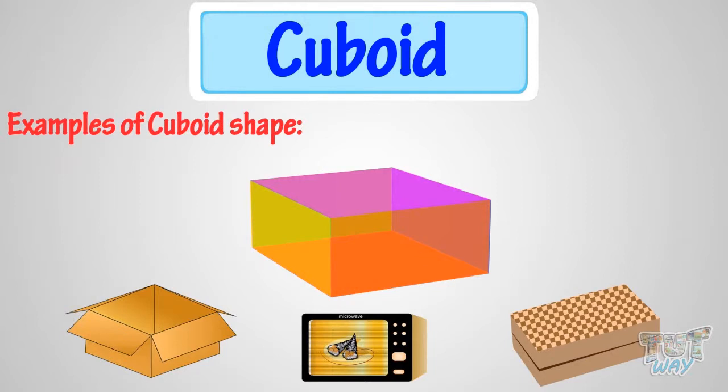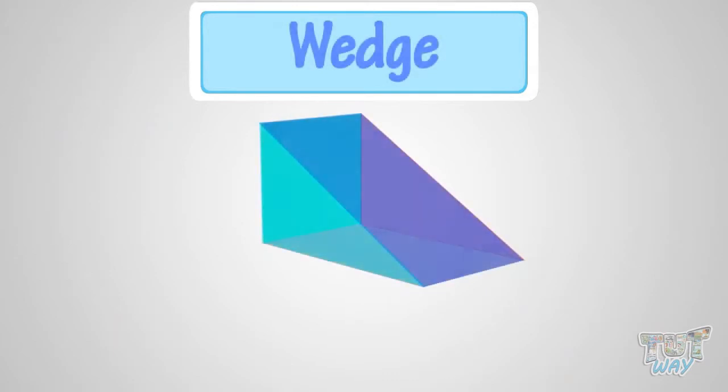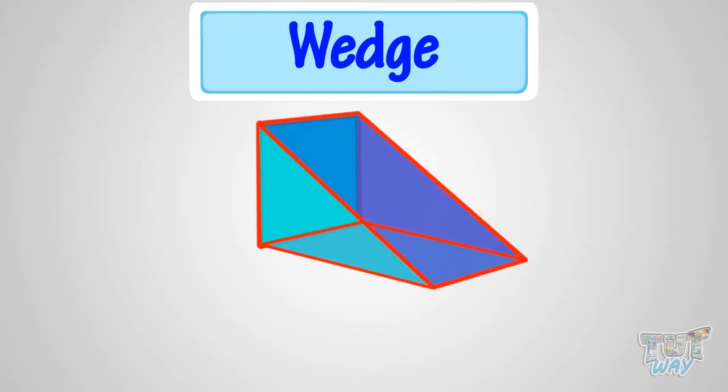Now we will learn one more interesting shape, that is a wedge. Wedge is a 3D shape that has two triangles and three rectangle shape faces. It is similar to a triangular prism.